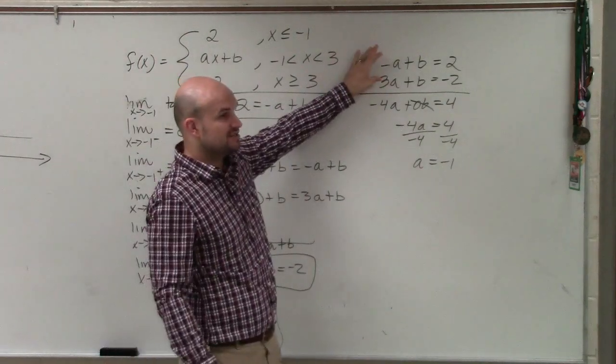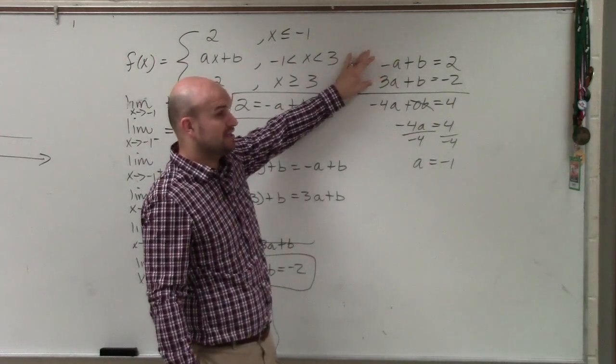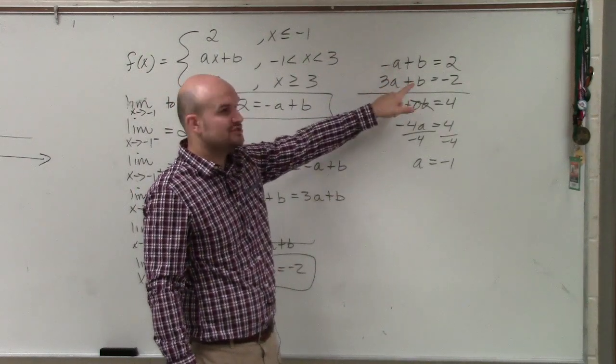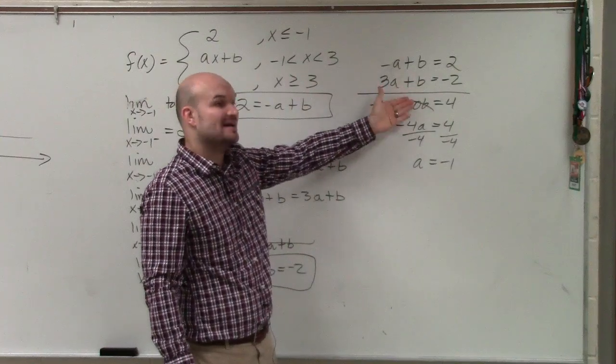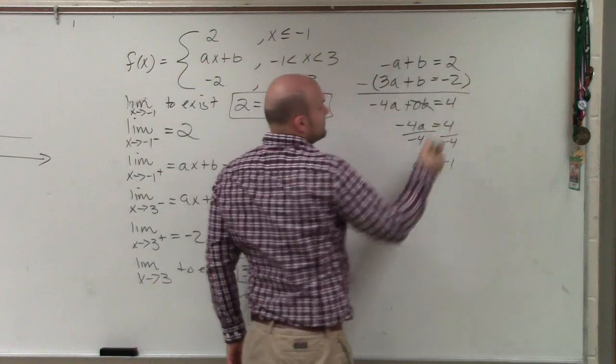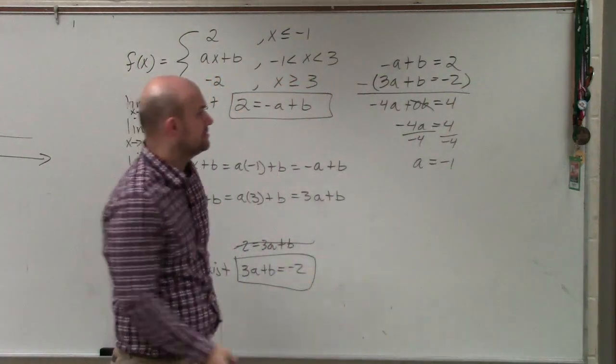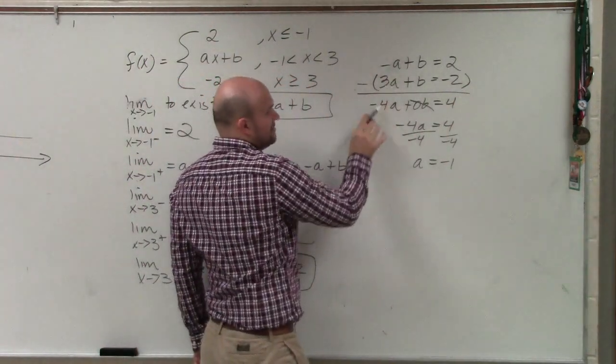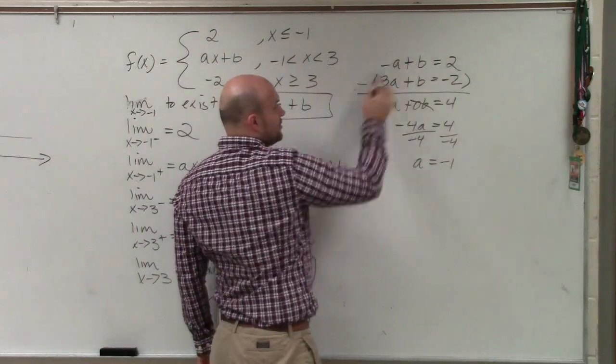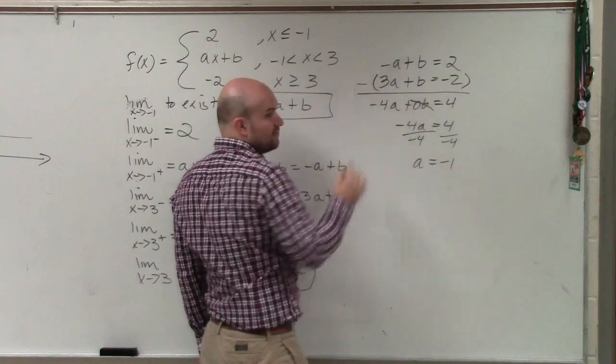So these are the two equations in my system. I need to eliminate B. Well, I can't add them, right? Because that's going to give me two B. So I have to subtract the equations. So I'm going to subtract the bottom equation from the top equation. So it's negative A minus three A. It's negative four A. B minus B is zero B. Two minus negative two is four.